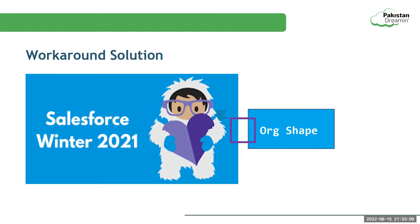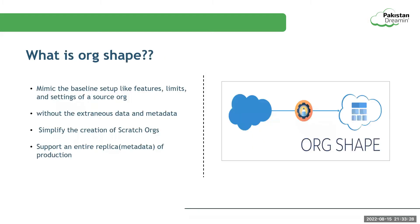Fortunately, in 2021, Salesforce Winter release brought an amazing solution that can make the lives of developers much easier. Developers can now quickly create scratch orgs without all the painstaking work with configurations. Let's give a warm welcome to the org shape solution. The org shape mimics the baseline setup — the edition, features, licenses, and settings of the source org — without extraneous data and metadata. If the features, settings, or the licenses of that org change, you can capture those updates by recreating the org shape. It is available in Developer, Professional, and Enterprise editions, but not in scratch orgs and sandboxes.